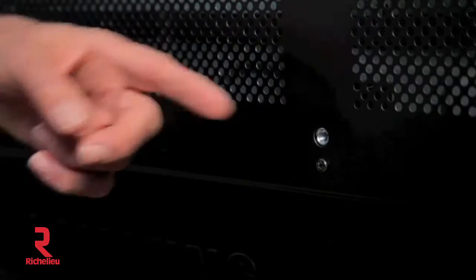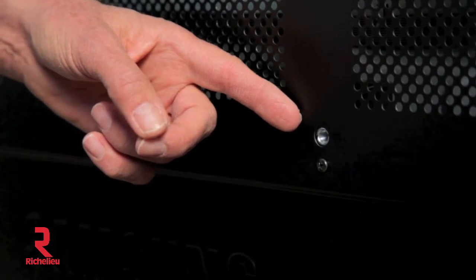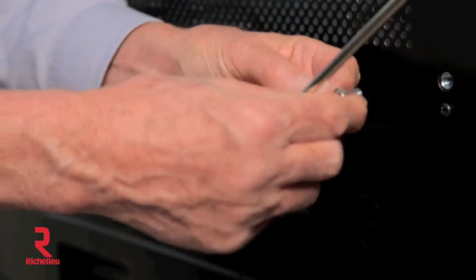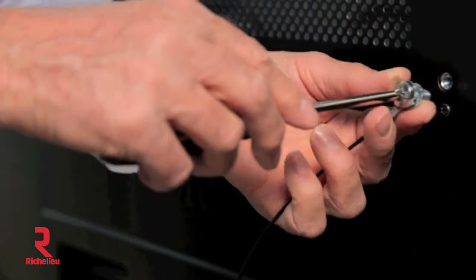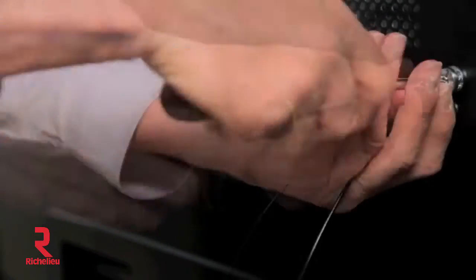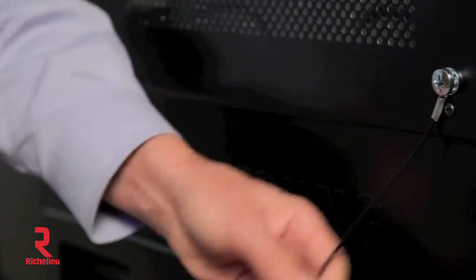To install the TV anti-tip kit, first locate the VESA mounts on the back of your flat screen TV. With a handheld Phillips screwdriver, attach the aircraft cables to the top two VESA mounts using appropriate size bolts with the lock washers.